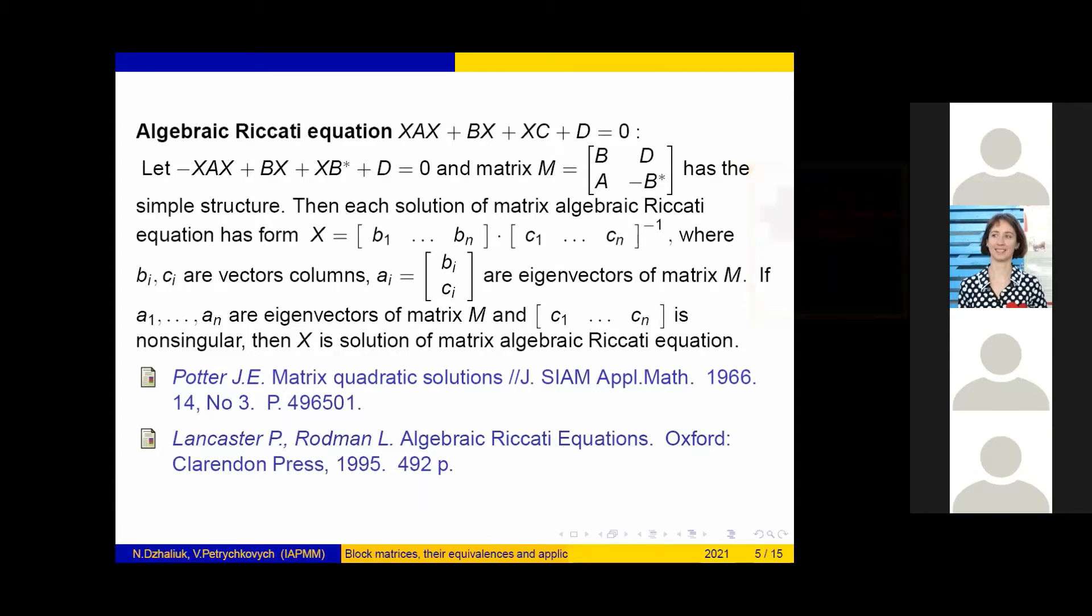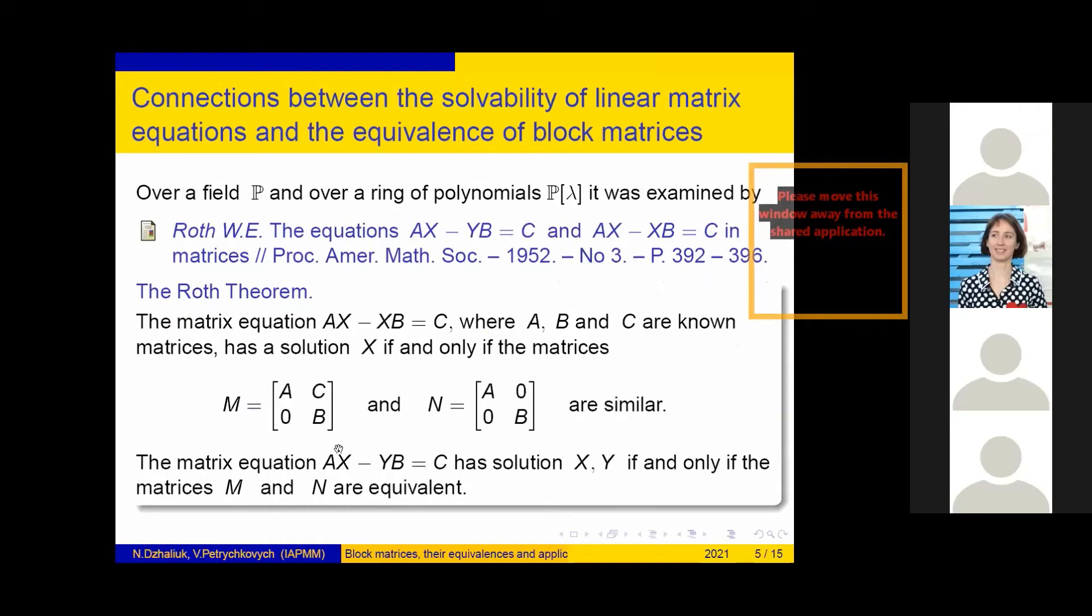Additional information can be found in the monograph of Lancaster and Rodman. It is well known the Roth theorem, which establishes the connections between the solvability of linear matrix equations and the similarity of equivalences of block matrices. The matrix equation AX - XB = C, where A, B and C are matrices, has a solution X if and only if the matrices M and N are similar.